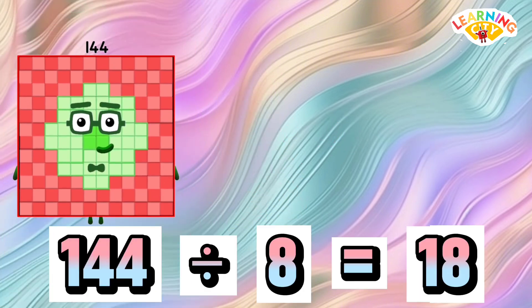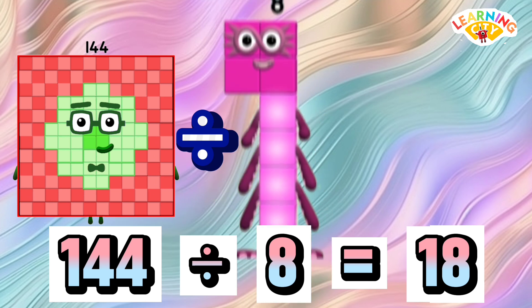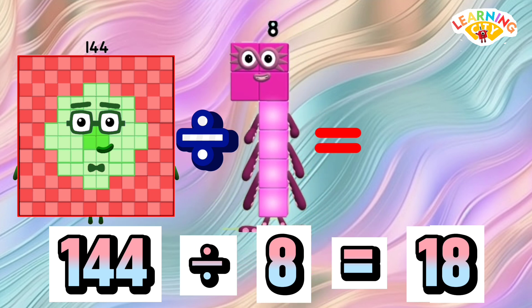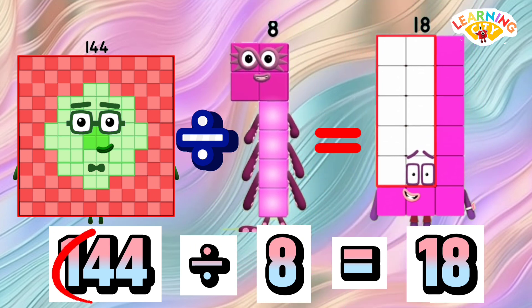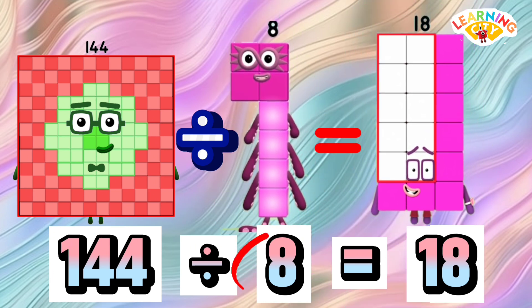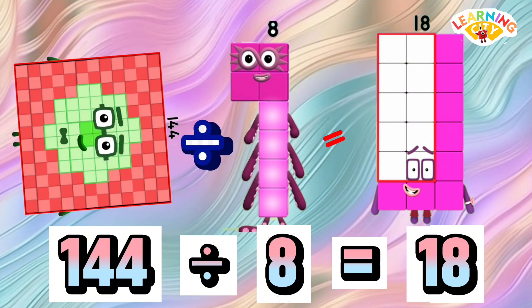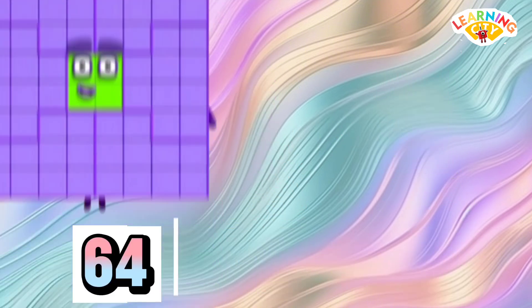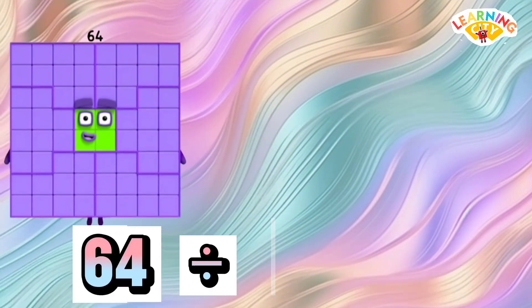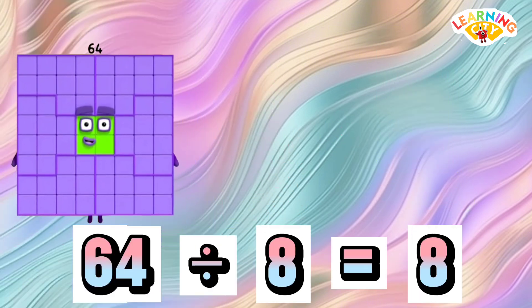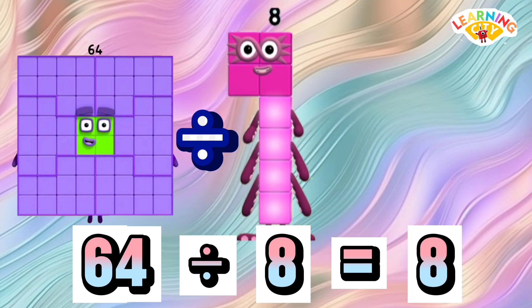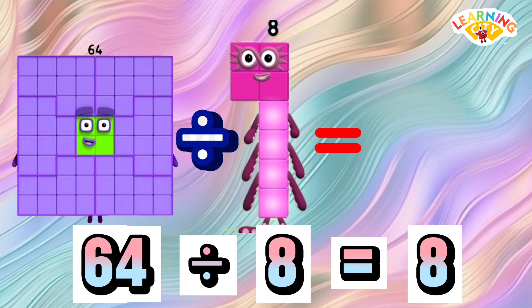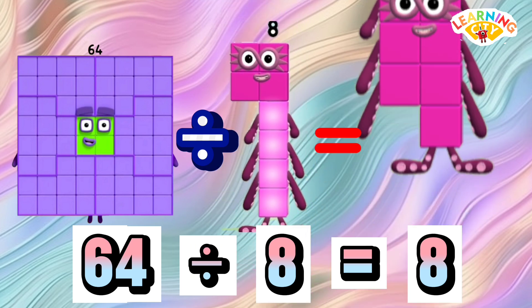144 divided by 8 is equals to 18. Let's repeat: 144, 8, 18. 64 divided by 8 is equals to 8.